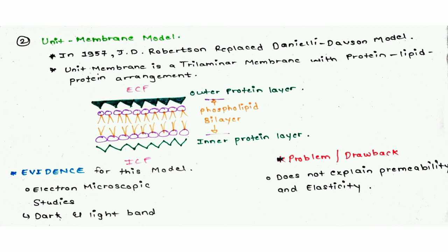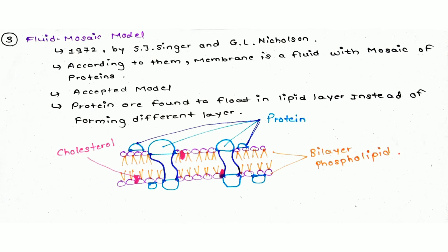The fluid mosaic model was proposed by S.J. Singer and G.L. Nicholson in 1972. According to them, the membrane is a fluid with a mosaic of proteins floating in the lipid bilayer, instead of forming a separate outer layer as previous models suggested. To understand this concept, consider the fluid as the lipid bilayer, and the mosaic — a type of art made up of different structures of different shapes and colors — represents the proteins floating within it. Hence the name: fluid mosaic model.